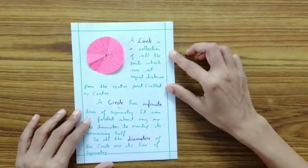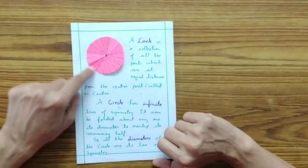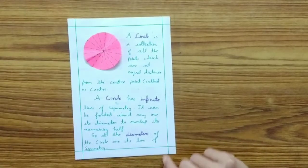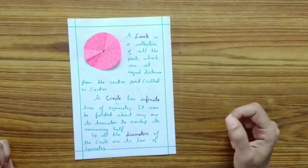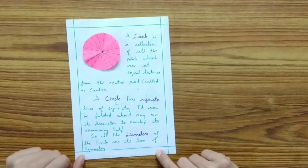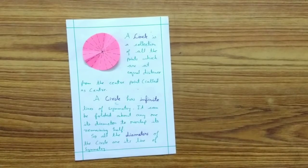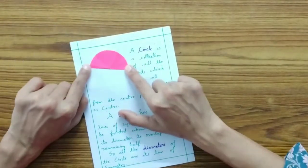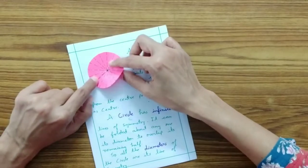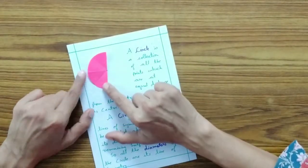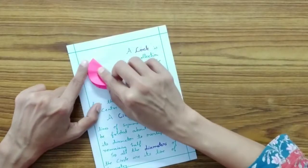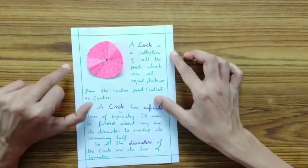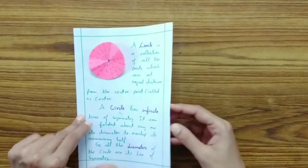Now let us see a circle. A circle is a collection of all the points which are at equal distance from a center point. It can have infinite lines of symmetry because it can be folded about any one of its diameters to overlap the remaining half. So all the diameters of the circle are its lines of symmetry. If you fold along any diameter the two parts will always overlap, and since there are infinite diameters in a circle, a circle has infinite lines of symmetry.